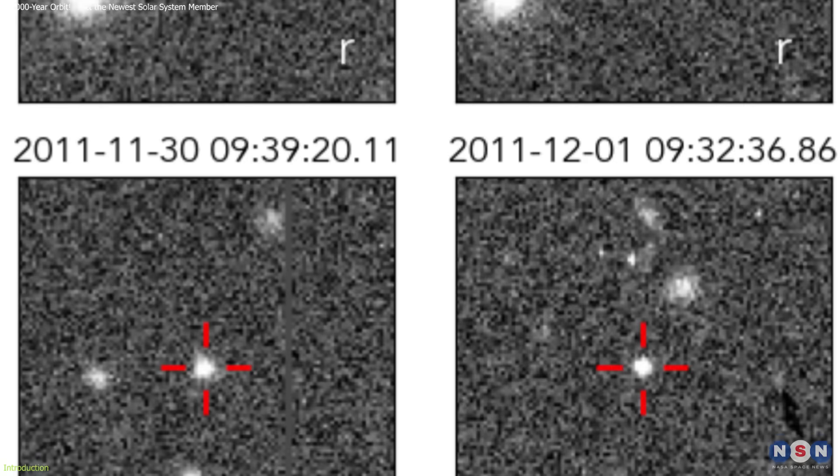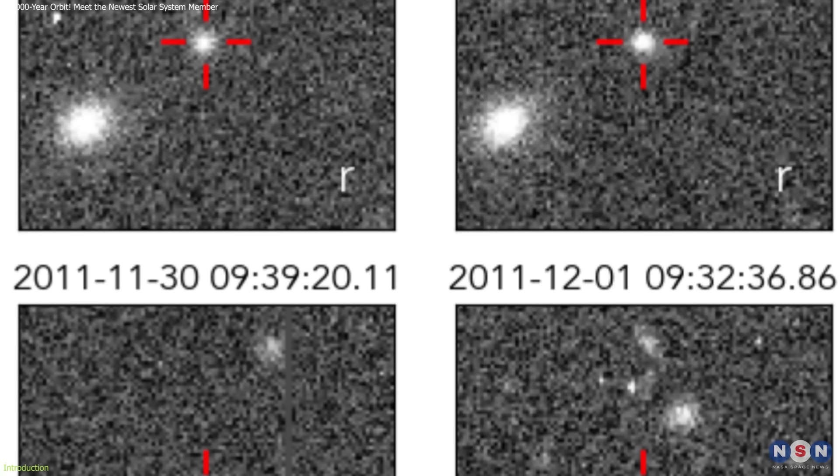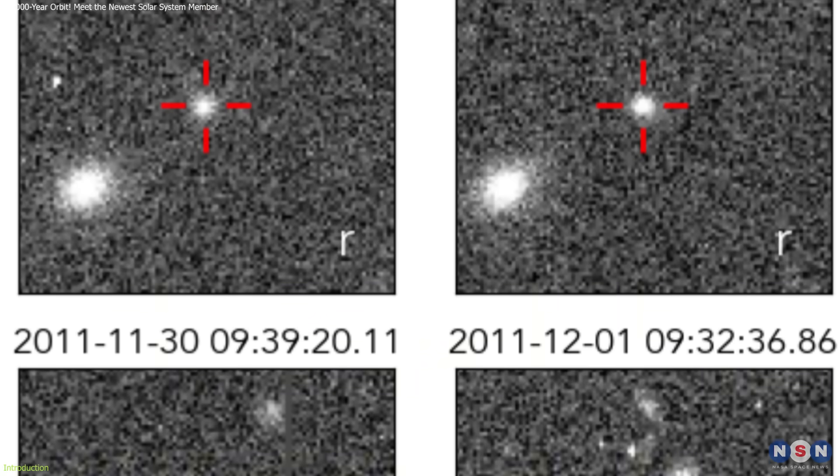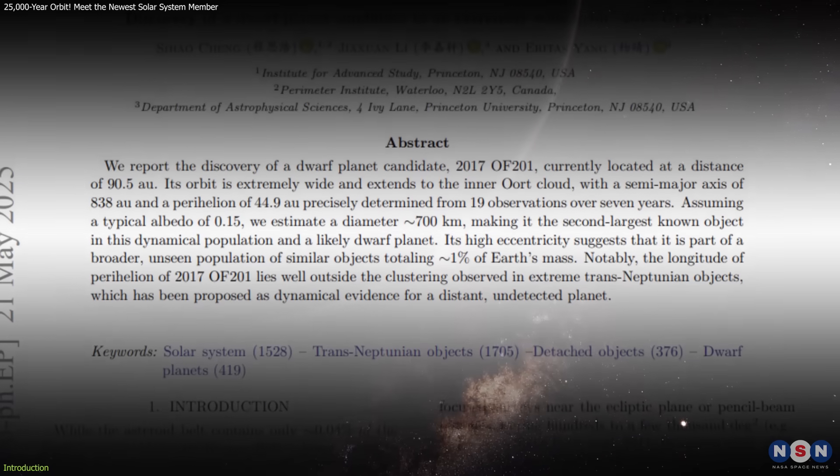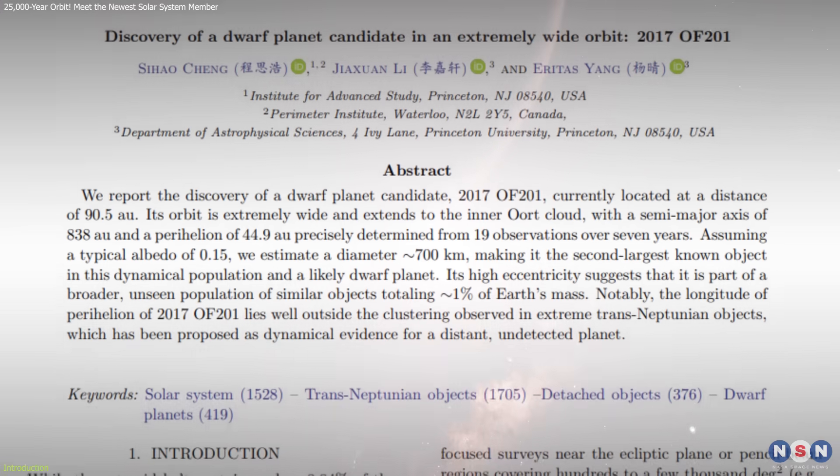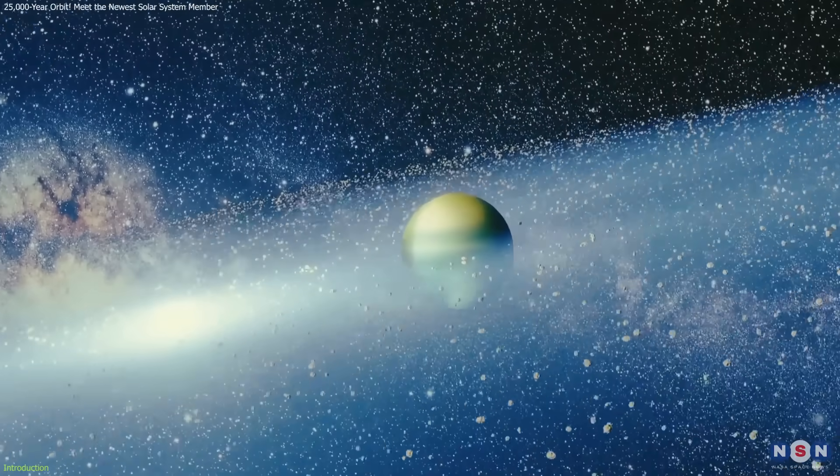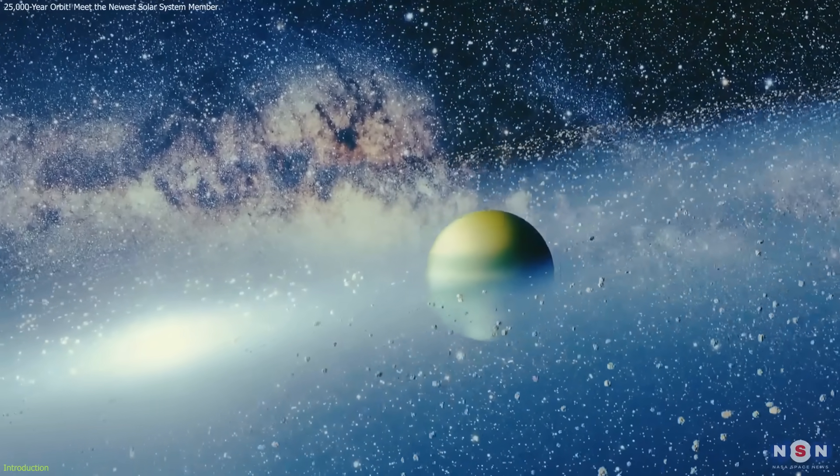A newly identified trans-Neptunian object, or TNO, that has captivated astronomers around the world. Officially announced on May 21st, 2025, by the International Astronomical Union's Minor Planet Center, this icy wanderer may even qualify as a dwarf planet.